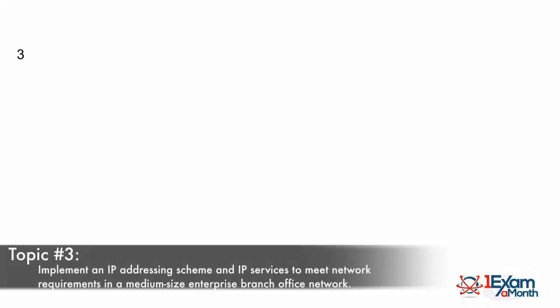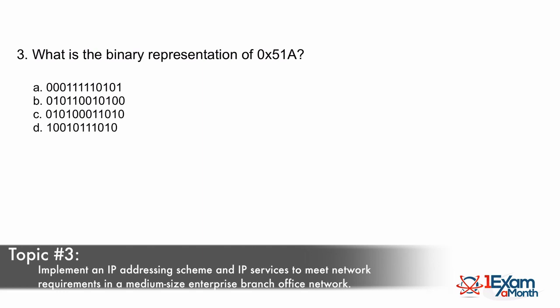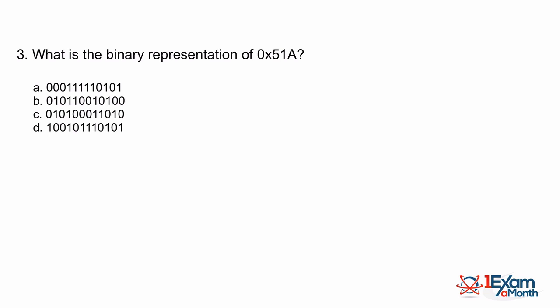Question three comes from topic three on the 640-911 exam: implement an IP addressing scheme and IP services to meet network requirements in a medium-sized enterprise branch office network. We're getting a bit mathematical here — we're being asked to convert the hexadecimal number 0x51A into binary. The good news is on the exam you'll be given a dry erase marker and a laminated piece of paper to do calculations. Let's walk through how to convert 0x51A from hexadecimal into binary.